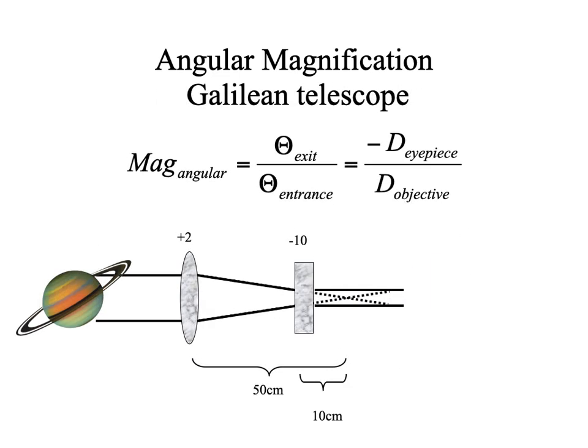Comparing to a Galilean telescope: in a Galilean telescope the objective is still positive, but the eyepiece is negative. The astronomical telescope is plus-plus; the Galilean telescope is plus for the objective and minus for the eyepiece. The tube length is also shorter.